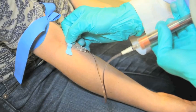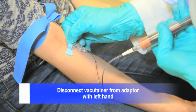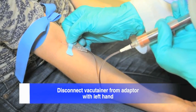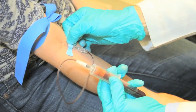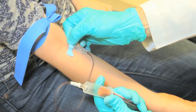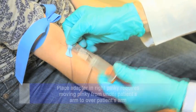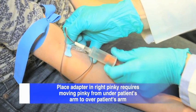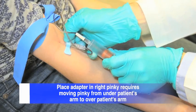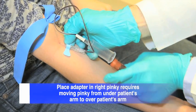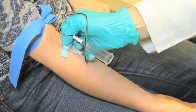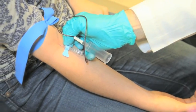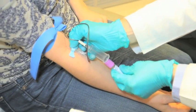To change tubes, first release the vacutainer from the adapter. To do this, grasp the vacutainer in your left pinky and the adapter in your left thumb and index finger. Upon abduction, you will successfully release the tube from the adapter. Next, place the adapter barrel in your right pinky. Note that during this maneuver, the right pinky will move from underneath the patient's arm to over it. You are now able to gently remove the vacutainer from the adapter with the left hand, place it on the tray, and grab the next tube.